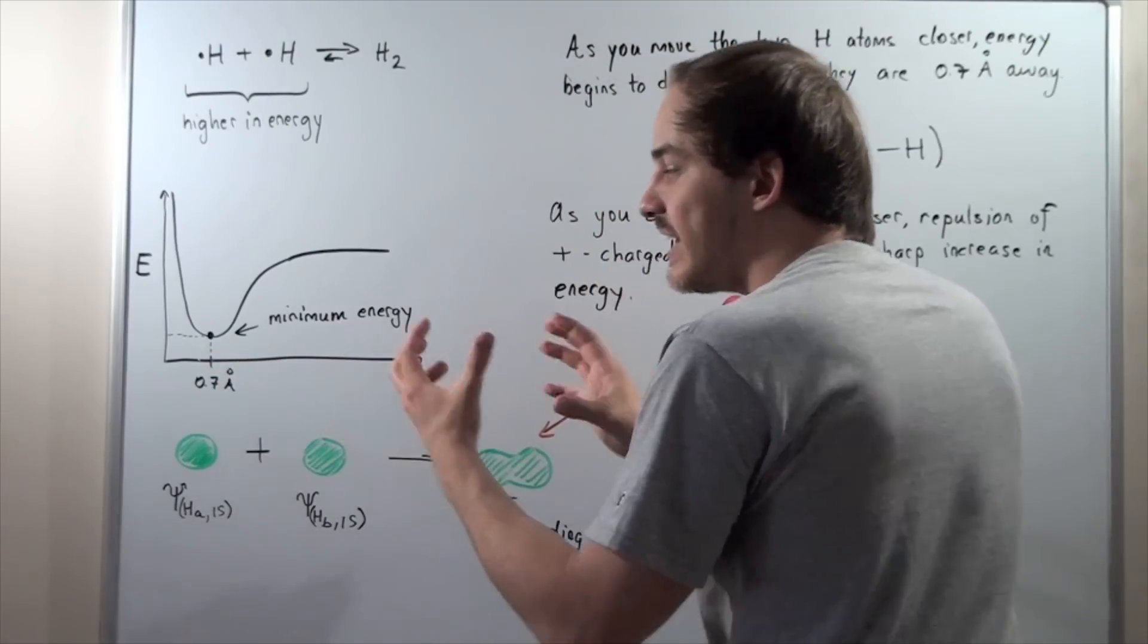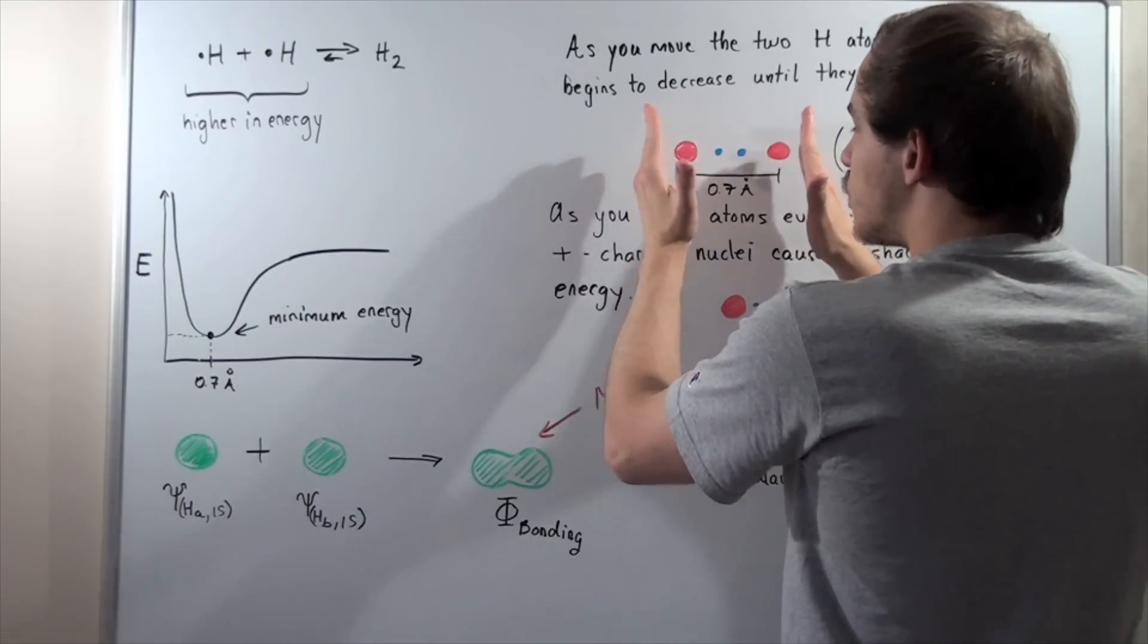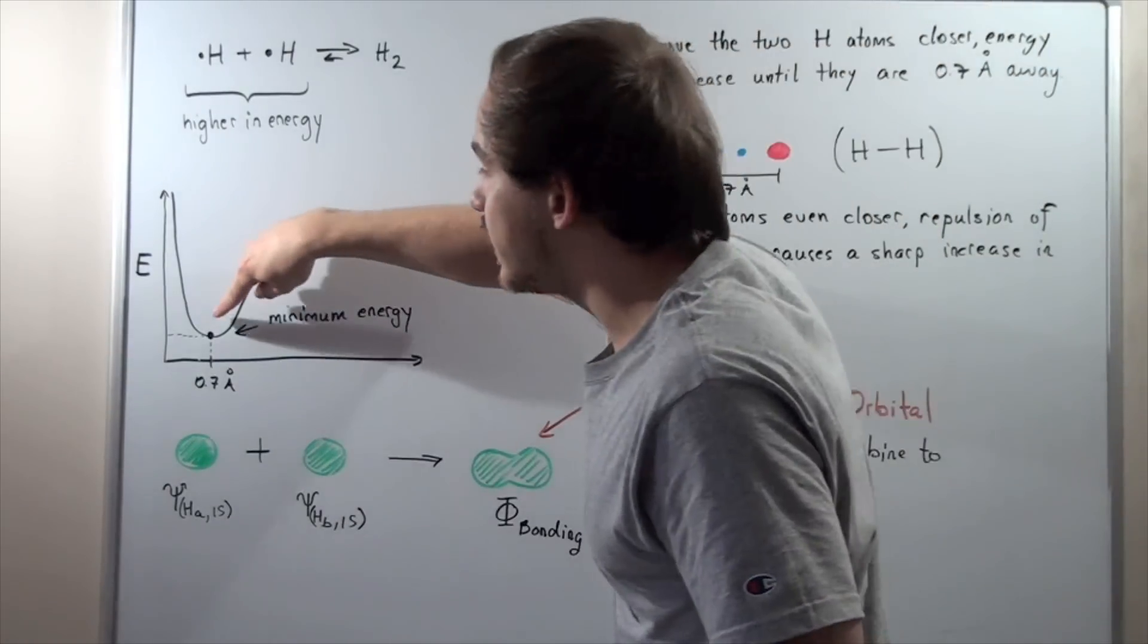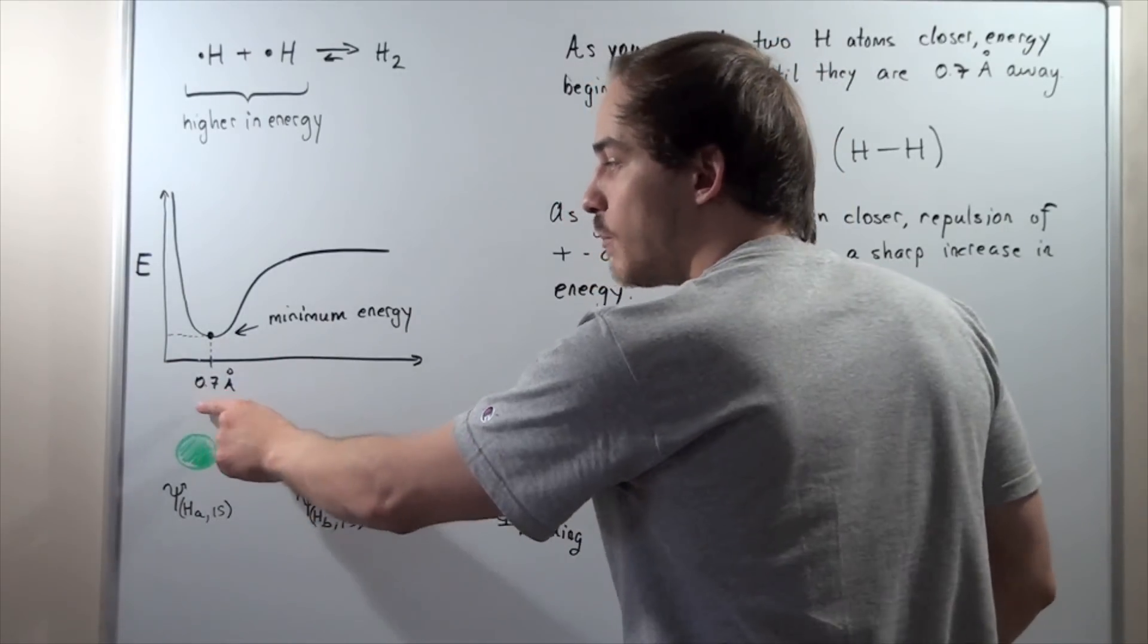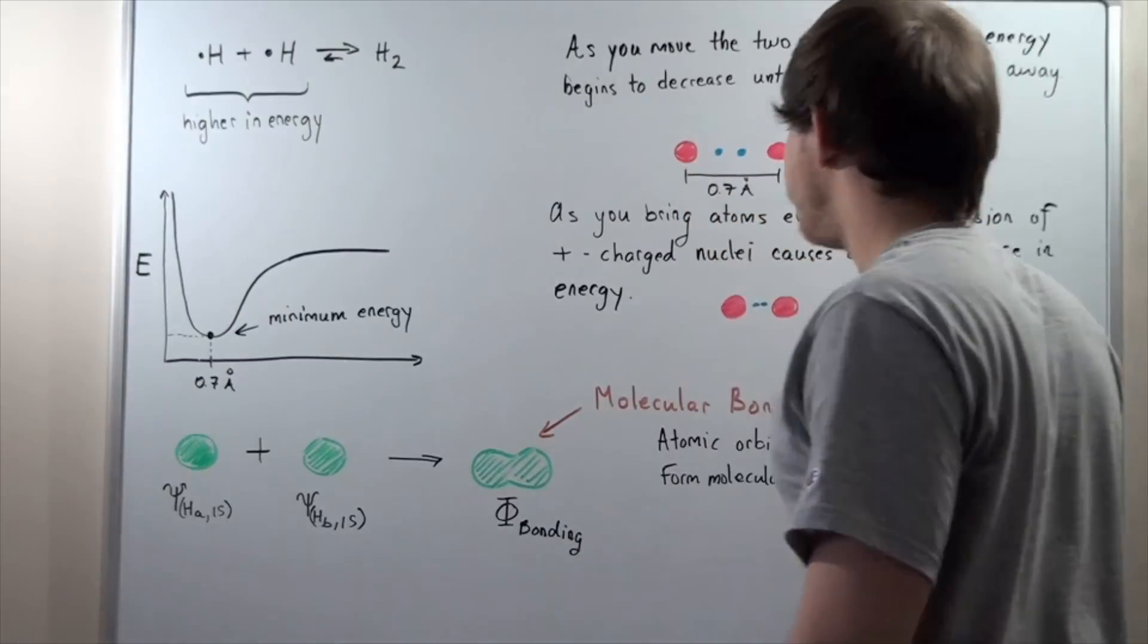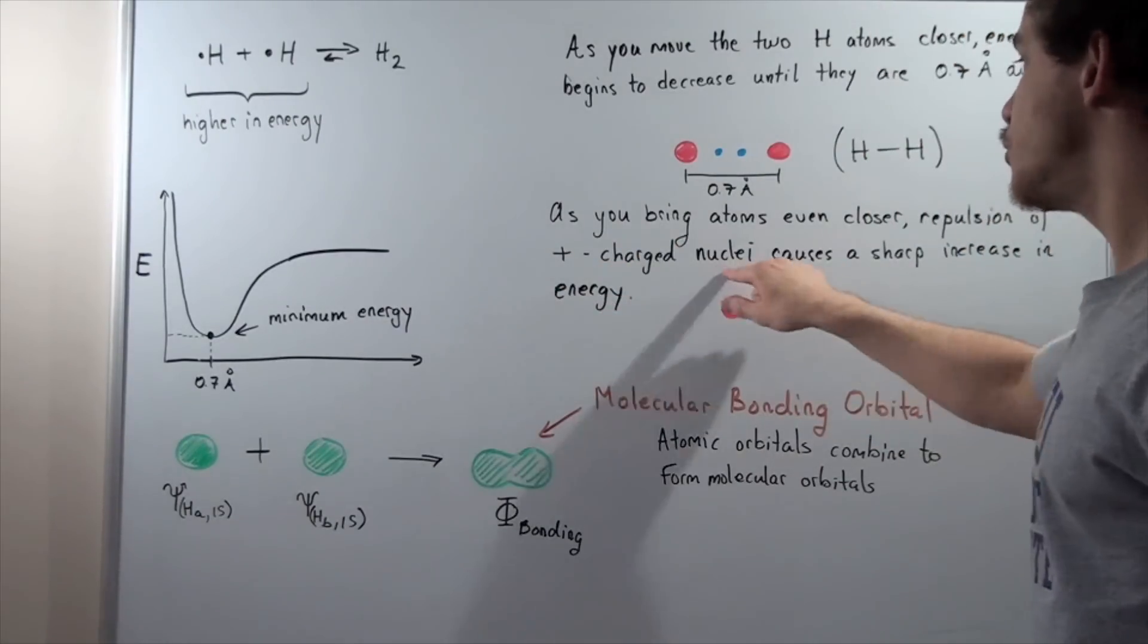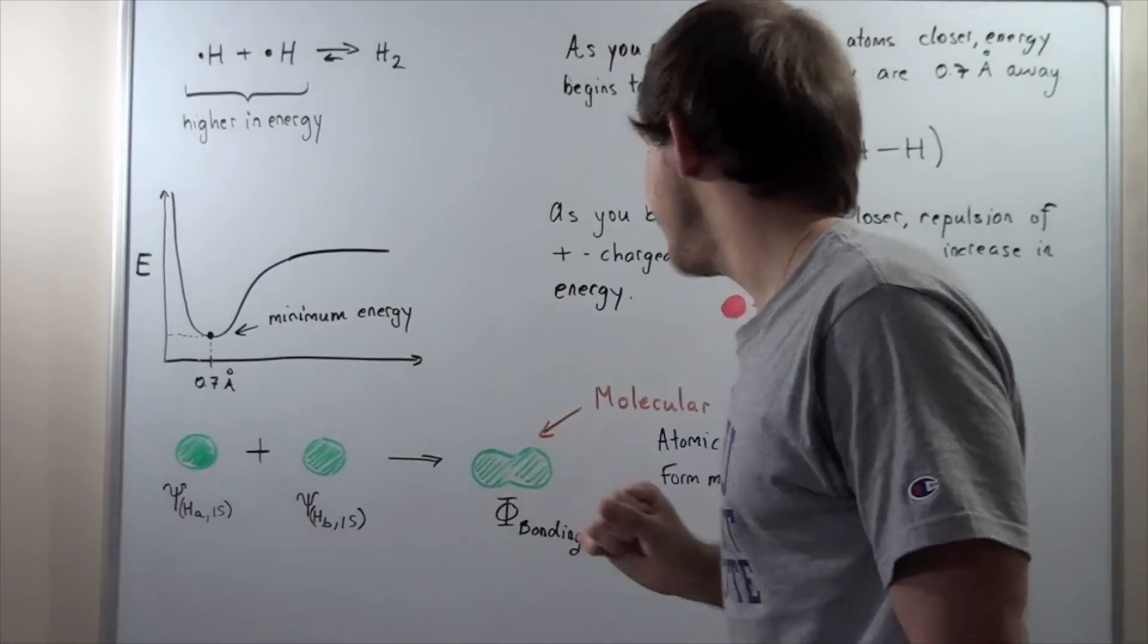What happens when I continue pushing them closer and closer? As I begin pushing them closer and closer, the repulsion forces begin to increase dramatically. And that's exactly why we see that as we go past 0.7 angstroms, our energy begins to increase. As you bring atoms closer and closer, repulsion of the positively charged nuclei causes a sharp increase in energy as we see here.